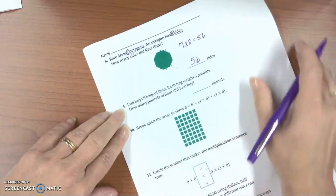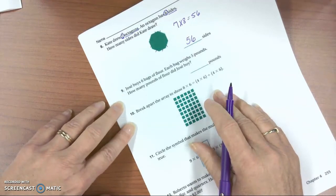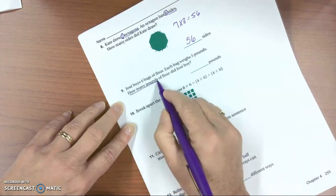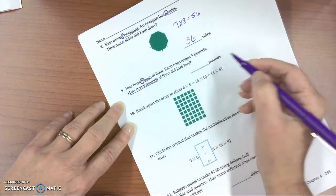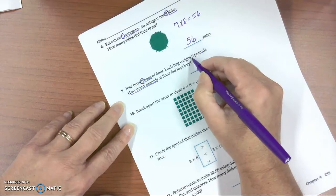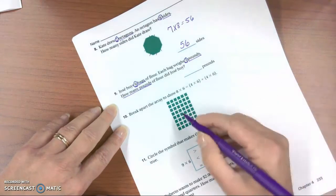Jose buys 6 bags of flour. Each bag weighs 5 pounds. How many pounds of flour did Jose buy? So our question, how many pounds did he buy? He has 6 bags of flour, and each bag weighs 5 pounds. So you can count,